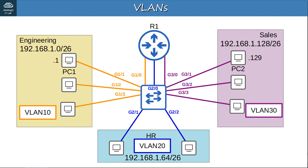For a quick review, here is the network topology used in the last video. There is a single switch and three VLANs. All of the switch interfaces are access ports, which belong to a single VLAN — either VLAN10, VLAN20, or VLAN30. Three interfaces are used to connect to the router, one for each VLAN.